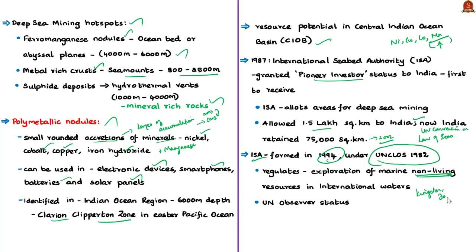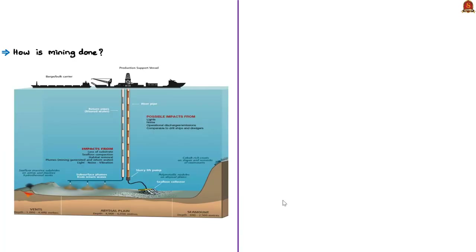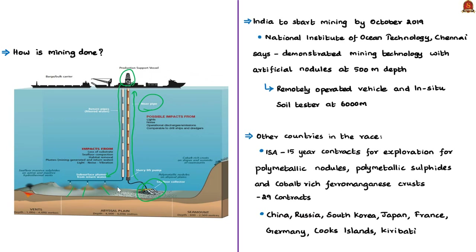Deep sea mining uses a riser pipe and seafloor collector to transfer polymetallic nodules to a mining ship; remaining rock debris is returned to the seafloor through a return pipe. India is expected to start mining operations by October 2019. The National Institute of Ocean Technology in Chennai has developed mining technology demonstrated at 500 meters depth and deployed a remotely operated vehicle at 6,000 meters. India's mining site is at approximately 5,500 meters depth, with high pressure and extremely low temperatures.